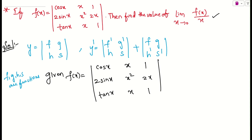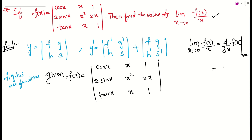Why do we find f'(x)? Because the limit x tends to 0 of f(x)/x is simply f'(0). The derivative of f(x) is f'(x), and the derivative of x is 1. So limit x tends to 0 of f(x)/x is nothing but f'(0). If you have any doubts, let me know.